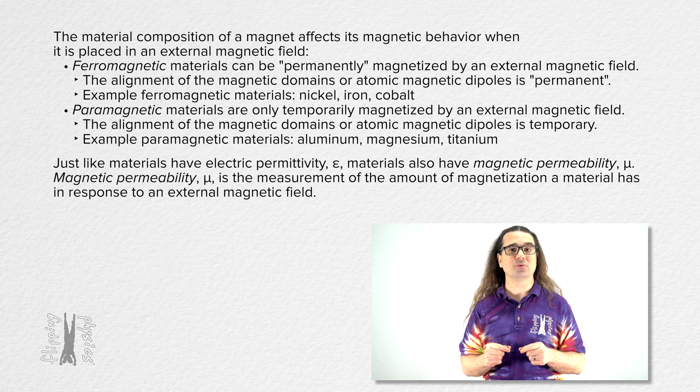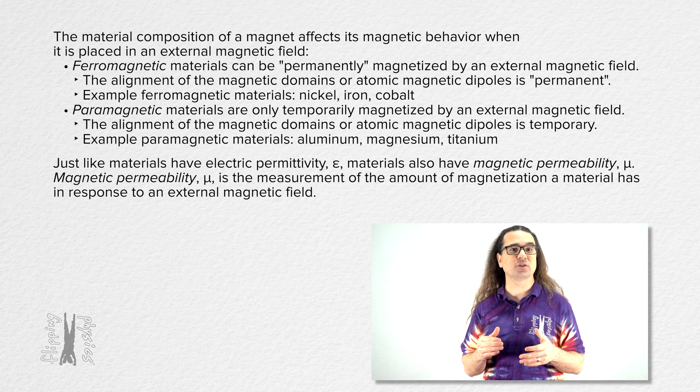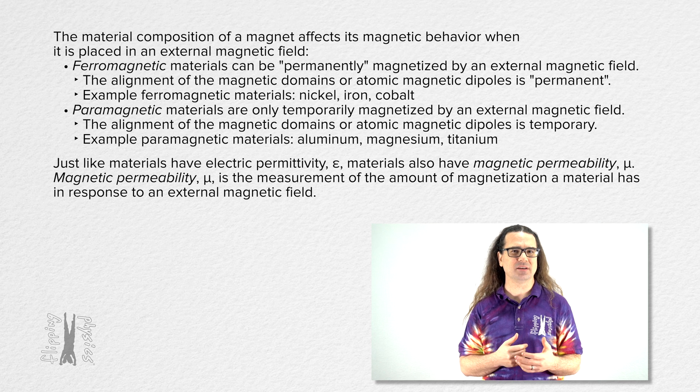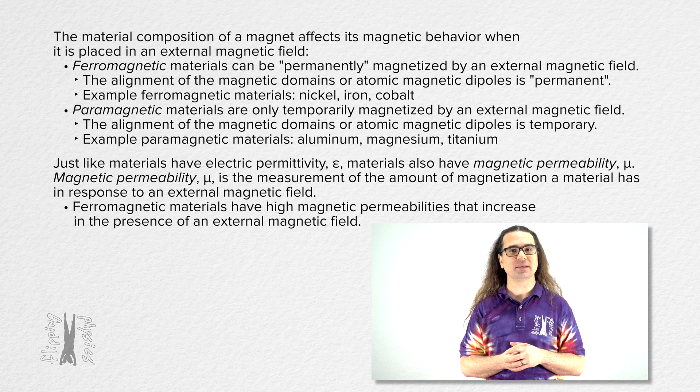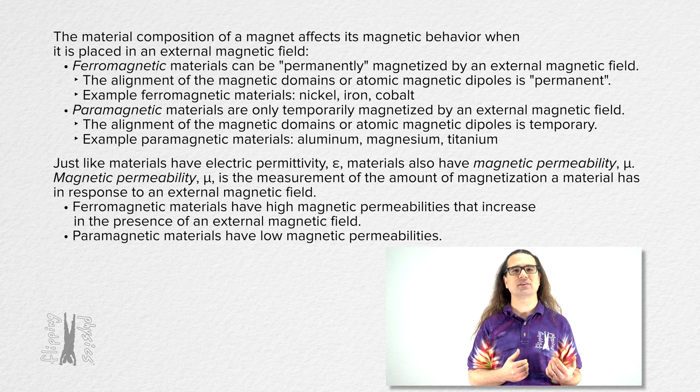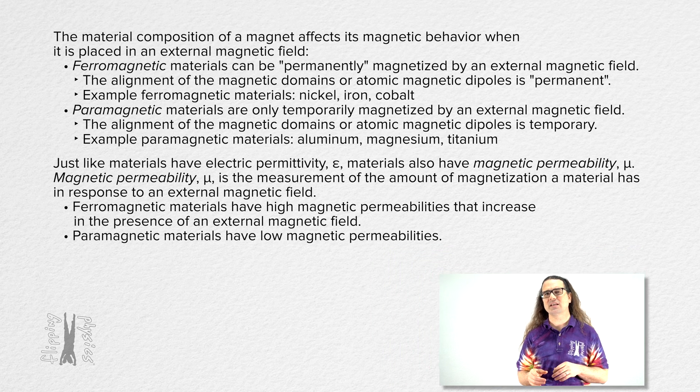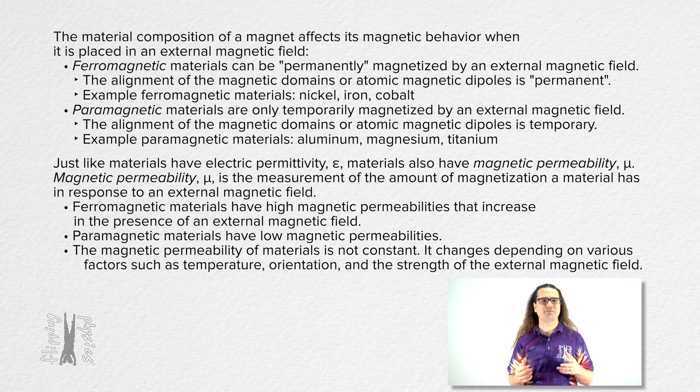Magnetic permeability μ is the measurement of the amount of magnetization a material has in response to an external magnetic field. Ferromagnetic materials have high magnetic permeabilities that increase in the presence of an external magnetic field. And paramagnetic materials have low magnetic permeabilities. Please realize that the magnetic permeability of materials is not constant. It changes depending on various factors such as temperature, orientation, and the strength of the external magnetic field.